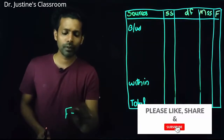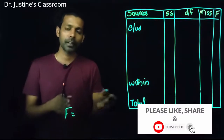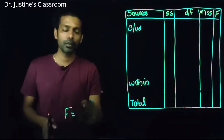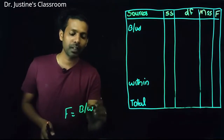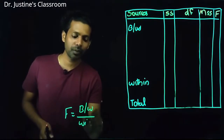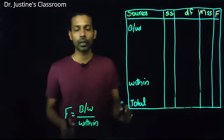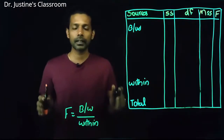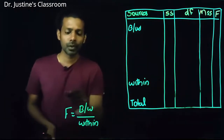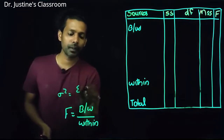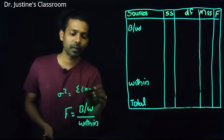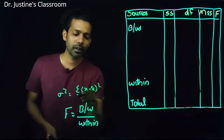Basically, what is ANOVA? In ANOVA analysis, we calculate an F-value based on between-group variance divided by within-group variance. We are calculating variance. Variance is the square of standard deviation, so variance equals the sum of (x minus x-bar) squared, divided by n minus 1.